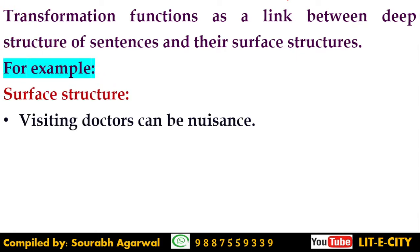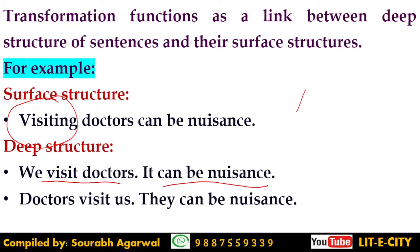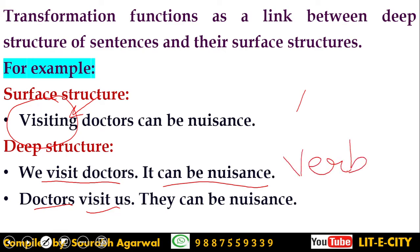For example, consider the surface structure: 'Visiting doctors can be a nuisance.' When we hear this sentence, our deep structure allows us to interpret it in two ways. First, we visit doctors — here 'visiting' is a verb (gerund), and it can be a nuisance. Second, doctors visit us — here 'visiting' is a participle. So in the first interpretation 'visiting' is a verb, while in the second it is a participle. This is how our deep structure knowledge helps us decipher the meaning of a sentence.